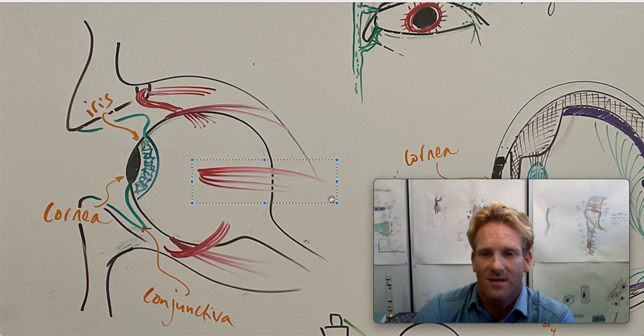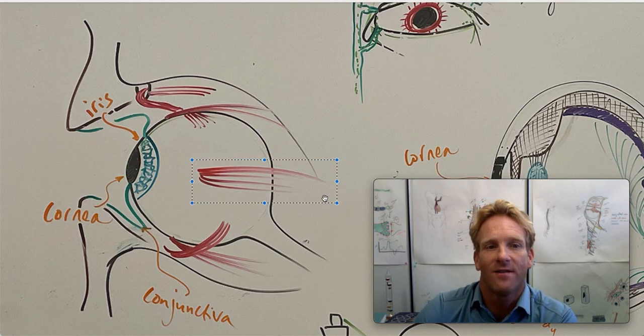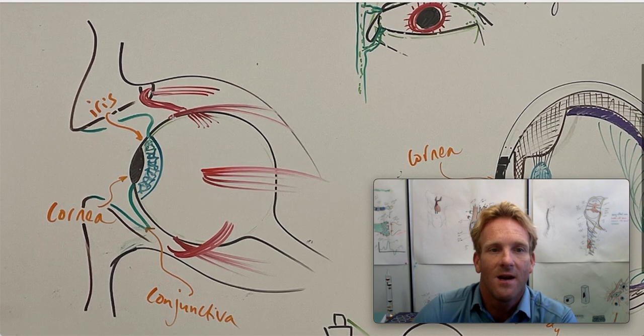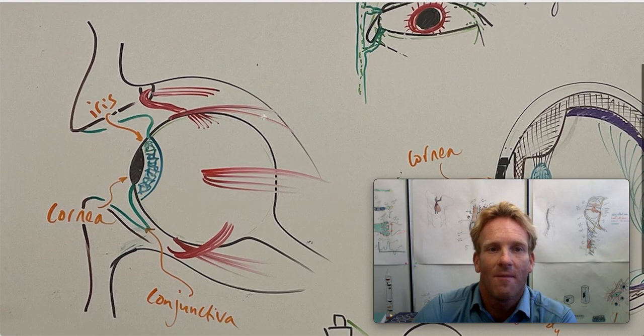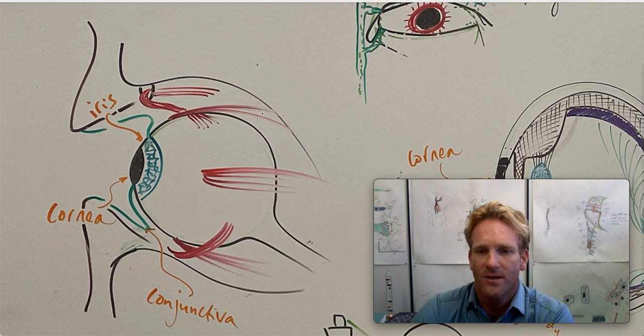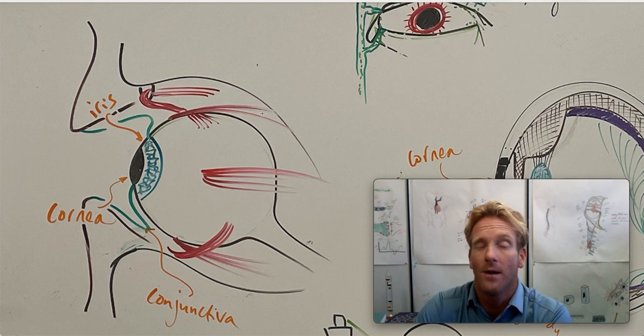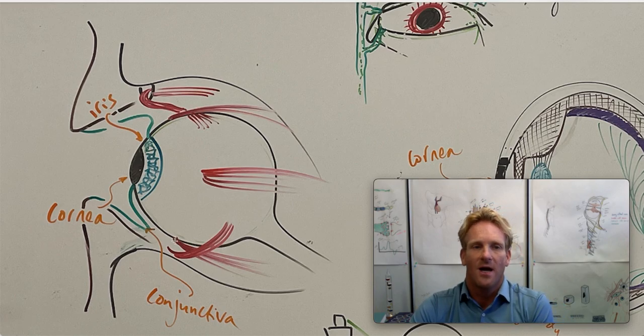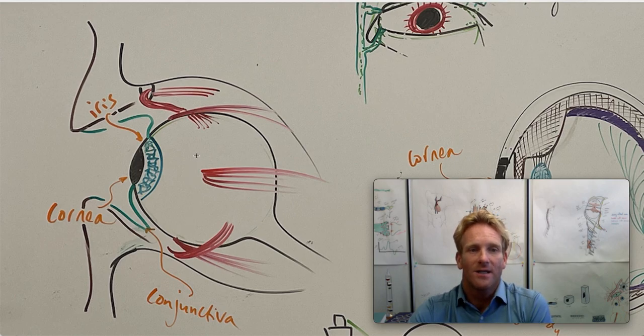This one on the left is called the lateral rectus, and that allows us to look laterally. This muscle that stretches on top is called the superior rectus. When that muscle contracts, it causes the eyes to look up and in. This muscle down here is called the inferior rectus. When that contracts, it causes the eye to look down and in. We also have a medial rectus on the medial side. When that contracts, it causes the eye to look medially.